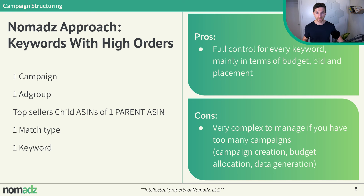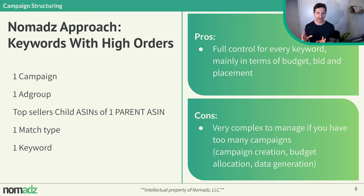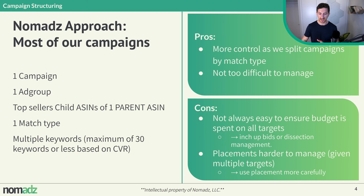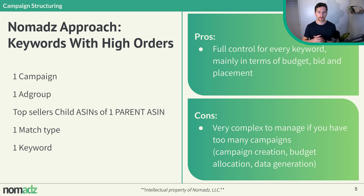The disadvantage of single keyword campaigns is the same as before — it's very complex to manage if you have too many campaigns. So we don't go too aggressive: if you start creating 100 or 200 campaigns like this, it becomes a mess. We highly suggest to keep it simple and have these two types of campaigns, limiting single keyword campaigns to around five to ten where we want to manage them manually. Even our structure has disadvantages, but we're working to minimize them through bid management, dissection management, and placement processes. If you have any questions, please let me know in the comments below.